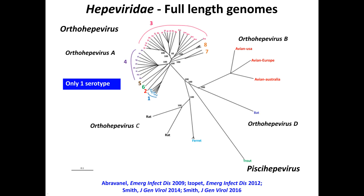This virus belongs to the Hepeviridae family, which contains two genera: Orthohepevirus and Piscihepevirus. The genus Orthohepevirus contains four species: Orthohepevirus A, B, C, and D. Strains that can be transmitted to humans belong mainly to Orthohepevirus A, containing eight genotypes and only one serotype, but also to Orthohepevirus C.